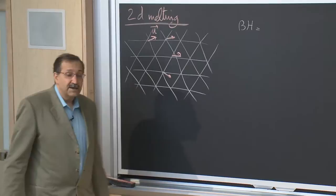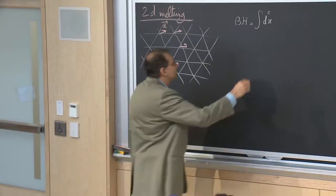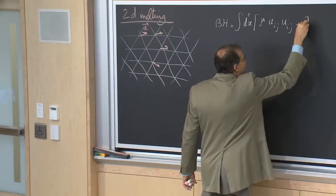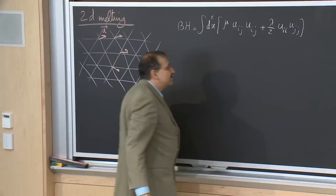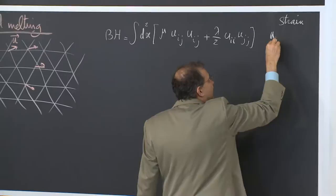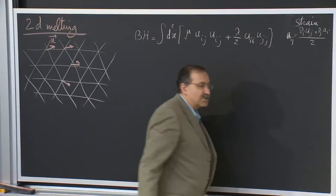The idea was that this is like an elastic material, as long as we are thinking about these long wavelength deformations u. And the energy cost can be written for an isotropic material in two dimensions in terms of two invariants. Traditionally, it is written in terms of the so-called Lamé coefficients mu and lambda, where u_ij, which is the strain, is obtained by taking derivatives of the deformation, ∂_i u_j, and symmetrizing it.